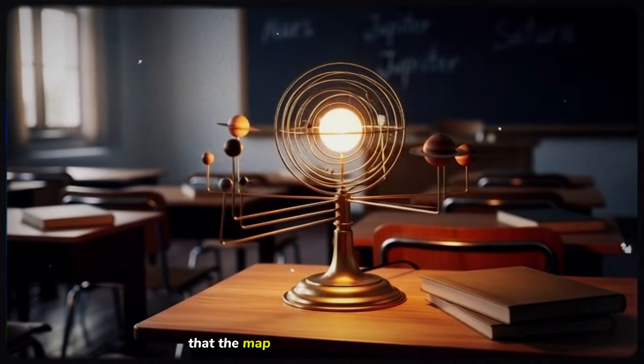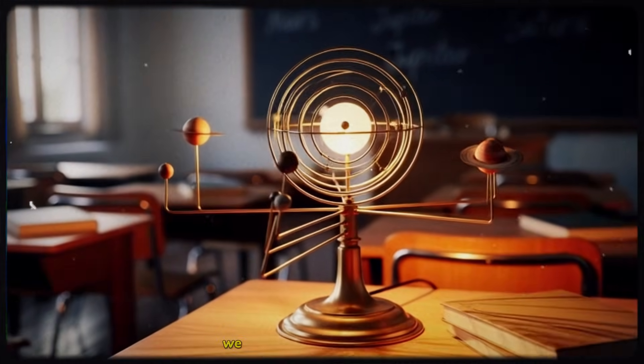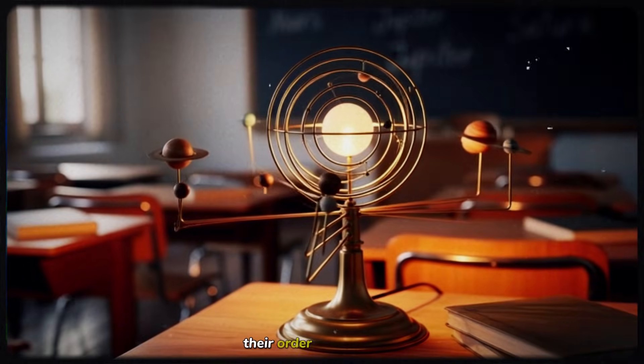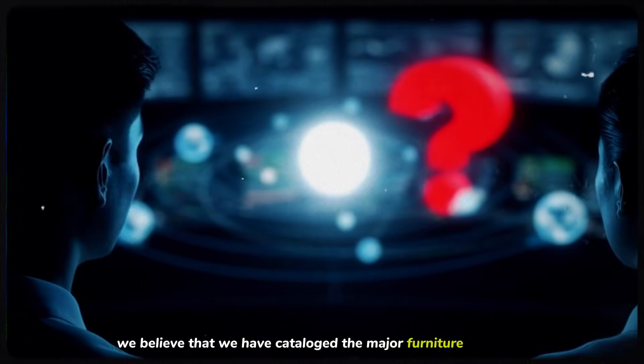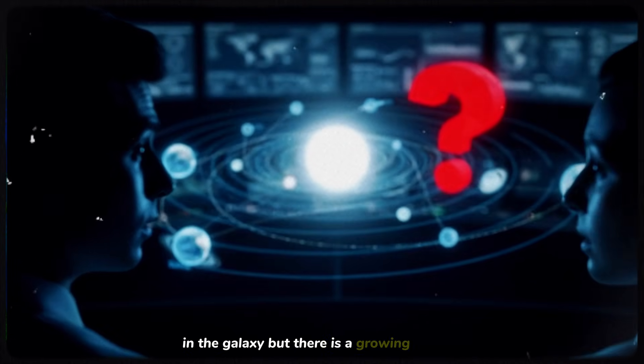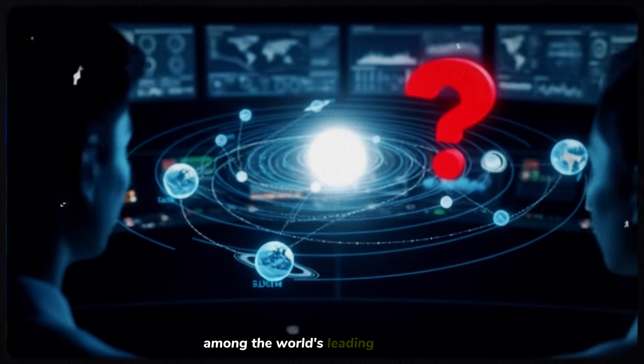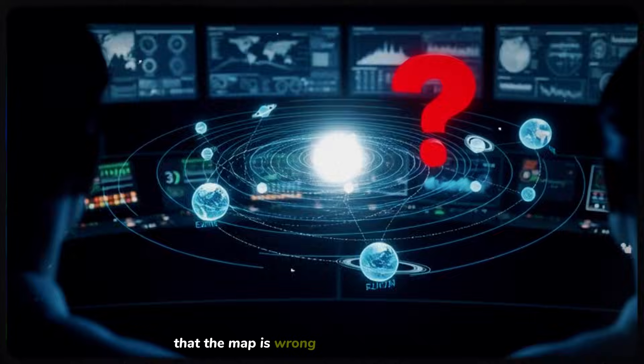We are taught from a young age that the map of our solar system is complete. We learn the names of the planets, their order, and their nature. We believe that we have cataloged the major furniture of our home in the galaxy. But there is a growing conviction among the world's leading astronomers that the map is wrong.